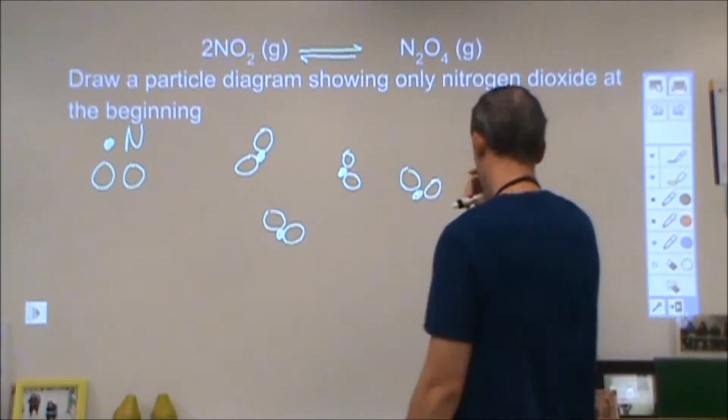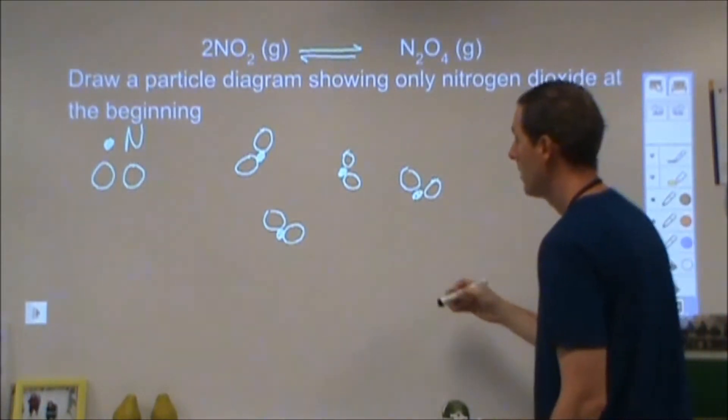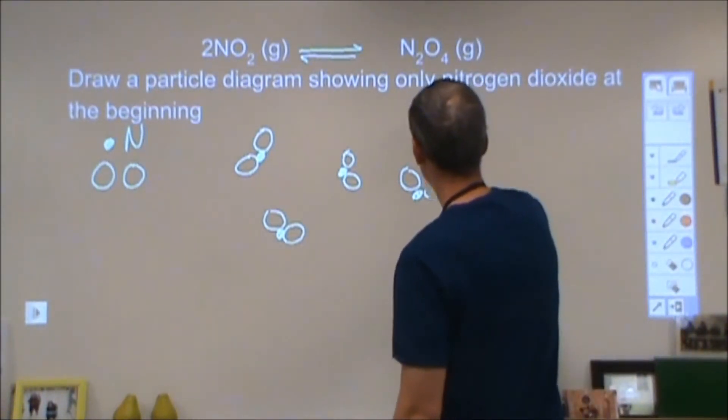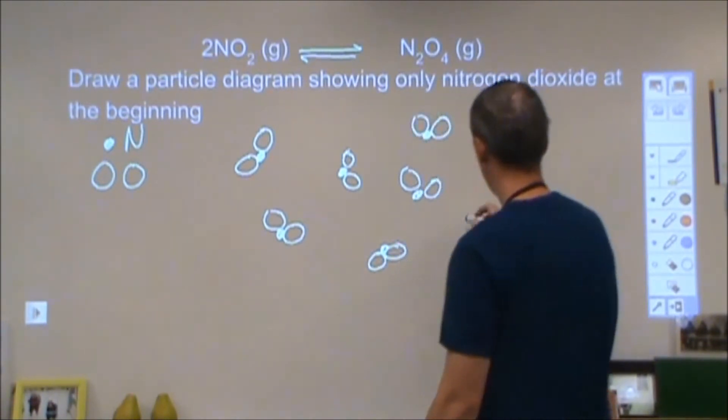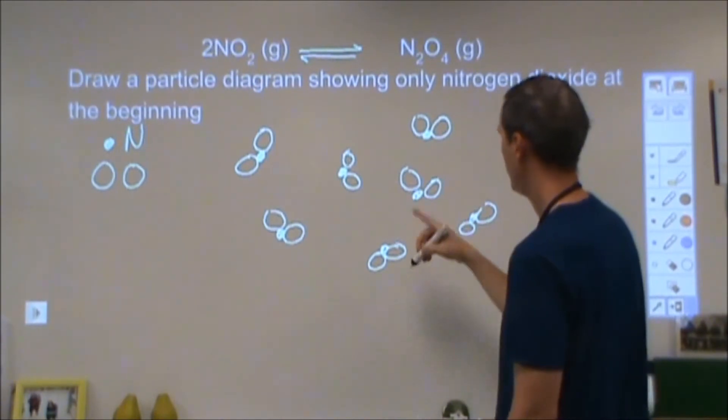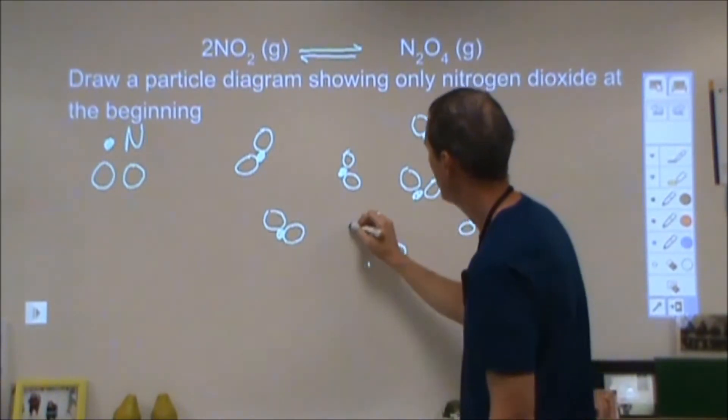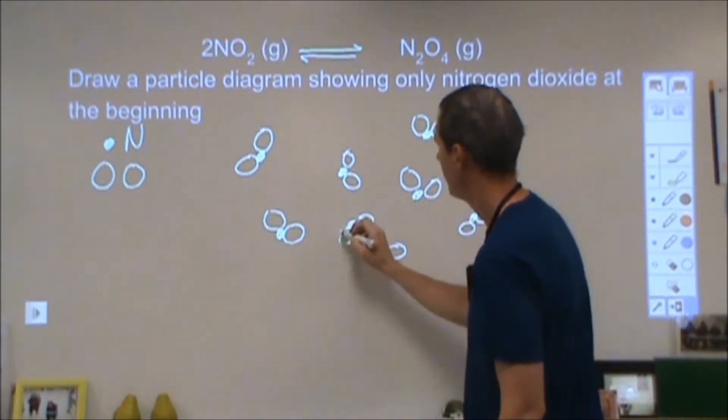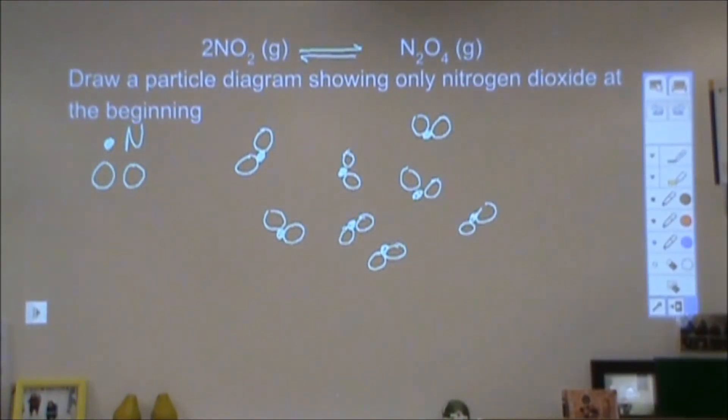I'm going to start off with eight of these. If you start with a different number, that's okay, you'll just have to scale from that answer. So here's my particle diagram showing only the nitrogen dioxide. I have eight of them.